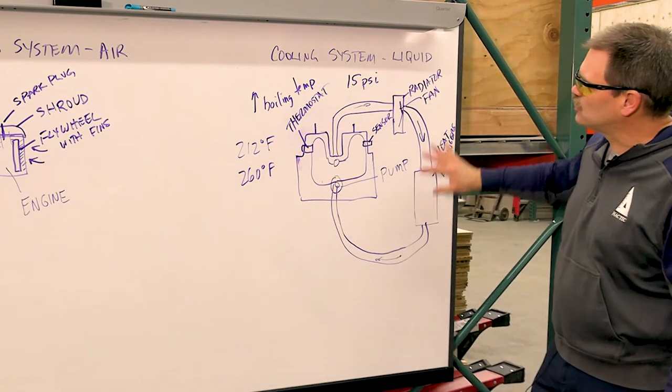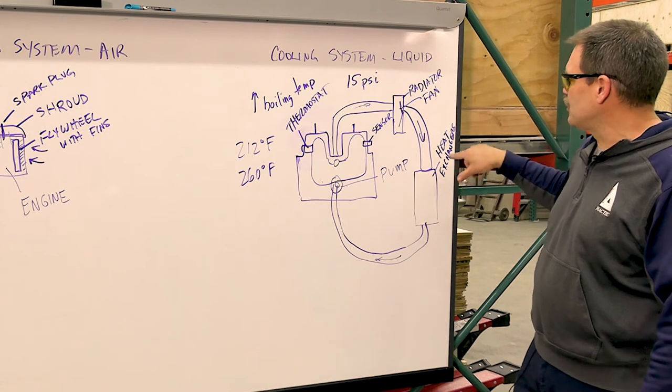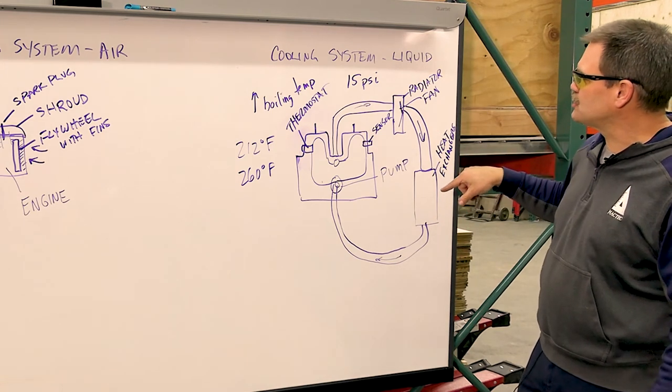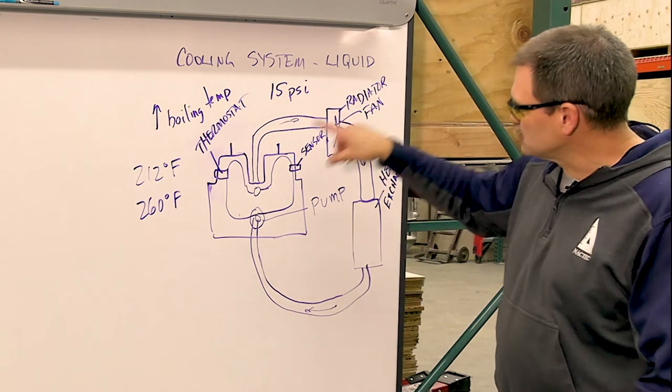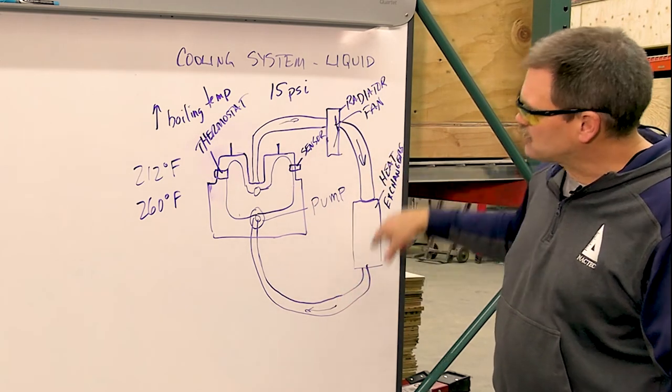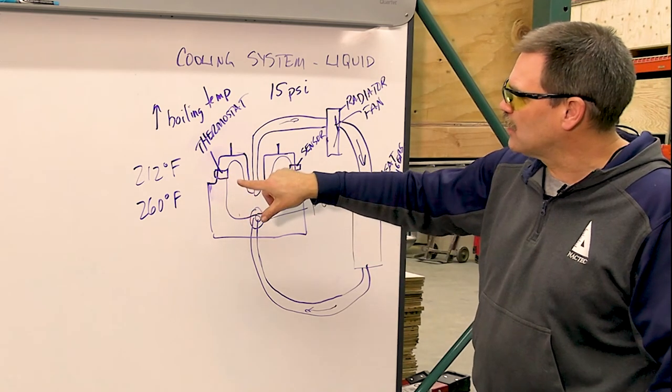And then the liquid-cooled systems. Some of the snow machines have radiators. They all have heat exchangers. It's circulating a water and antifreeze mix, and it's a closed loop, and it just keeps going around and around.